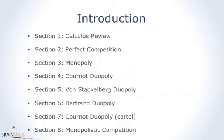We'll start with the calculus review. And of course, if you know how to differentiate functions and maximize functions, you're welcome to skip this section. In every following section, we will look at one form of competition. So we'll start with perfect competition, then monopoly, then the Cournot, the Von Stackelberg, the Bertrand, the cartel case of the Cournot duopoly, and finally the monopolistic competition.